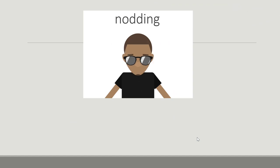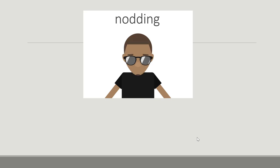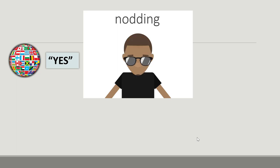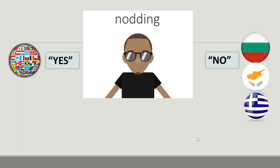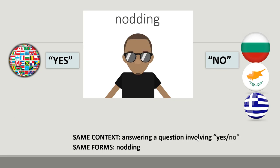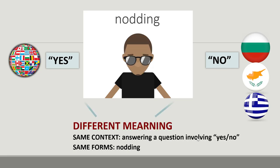We can also quote an example of meaning-based misinterpretation in the area of body language. In many cultures, the physical gesture of nodding the head is used in the context of answering a yes-no question. In some countries, such as Bulgaria, Cyprus, and Greece, nodding means yes while shaking the head means no — which is usually very confusing for foreigners from countries where nodding means yes and shaking the head means no, because the familiar form in the same context has an opposite meaning.